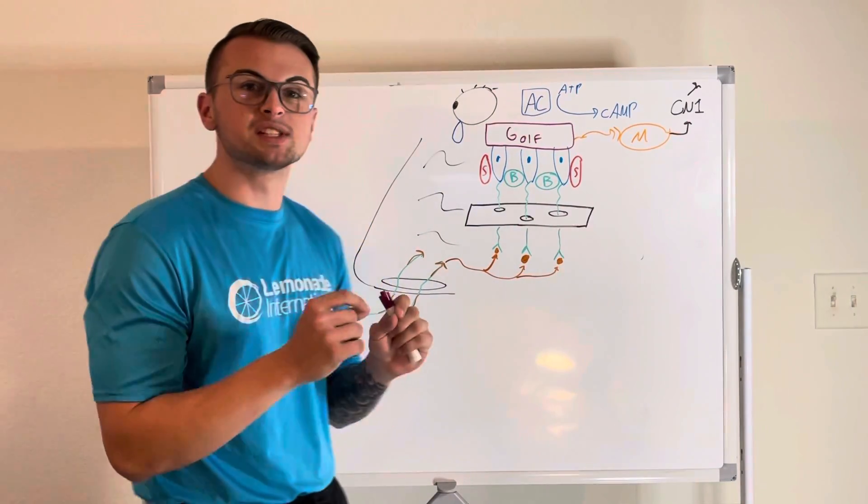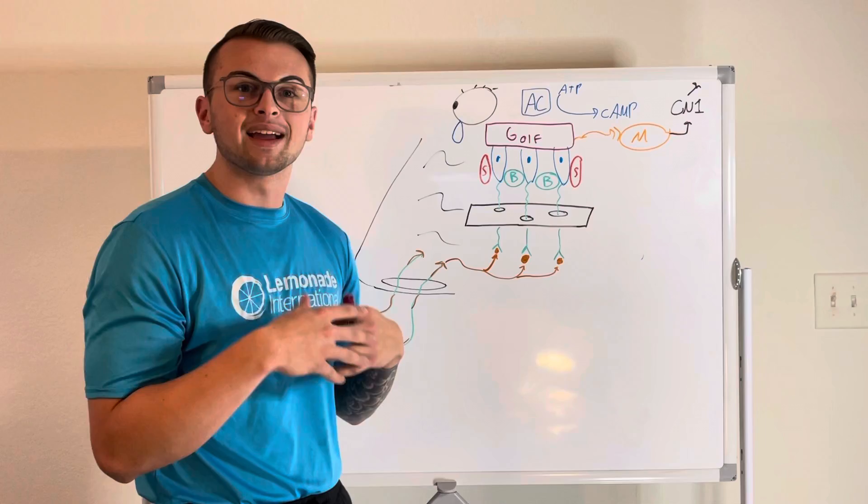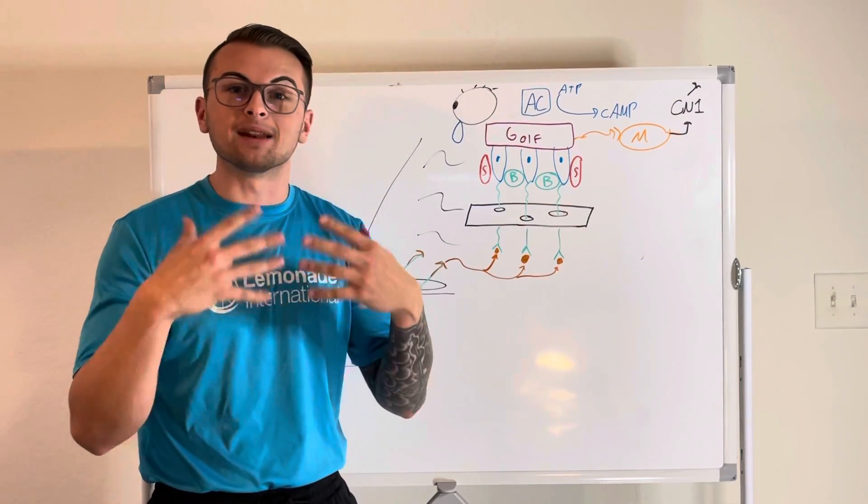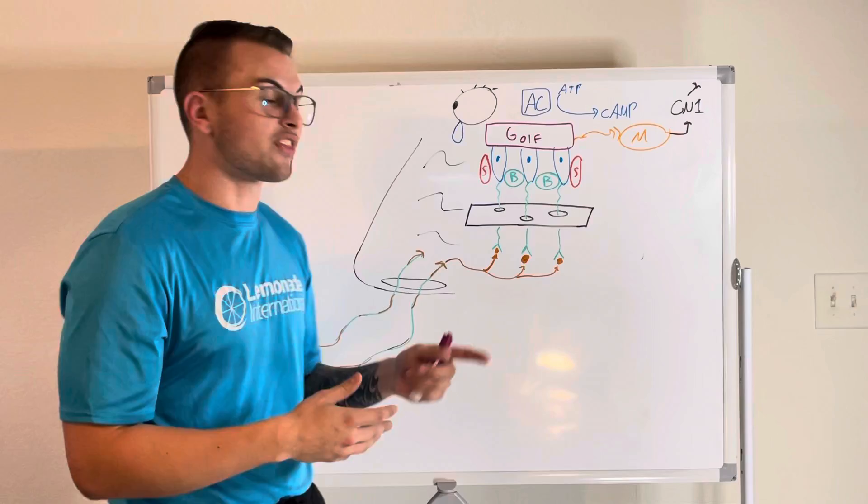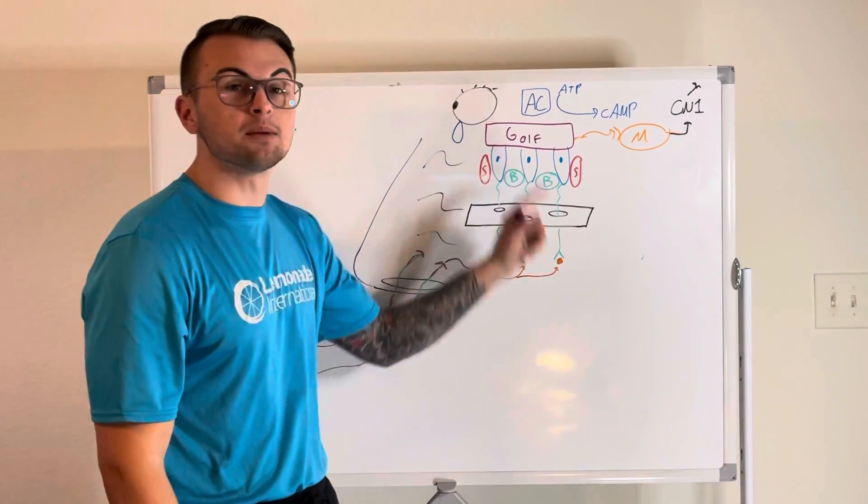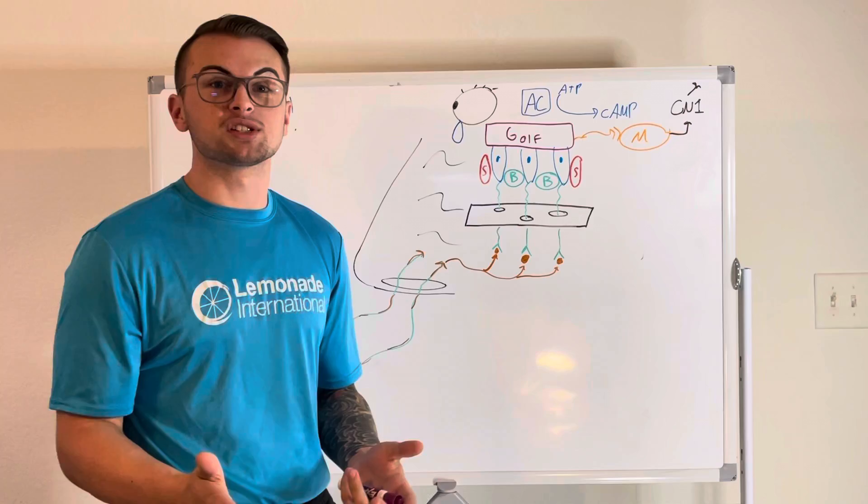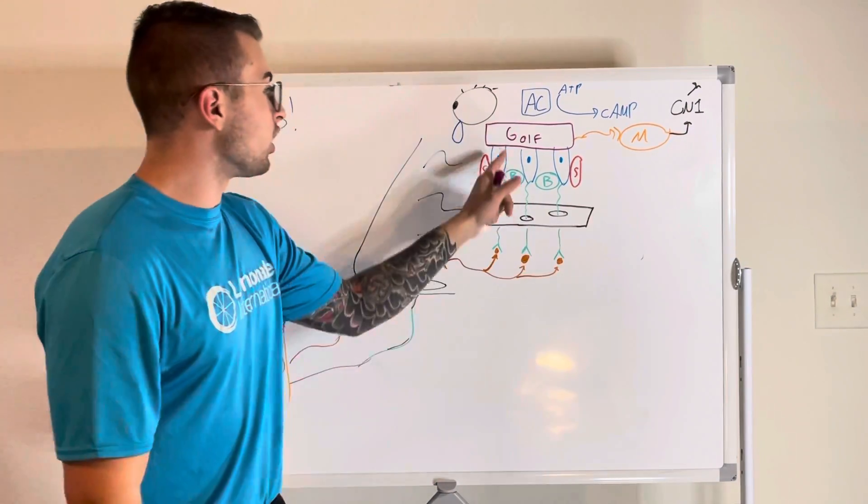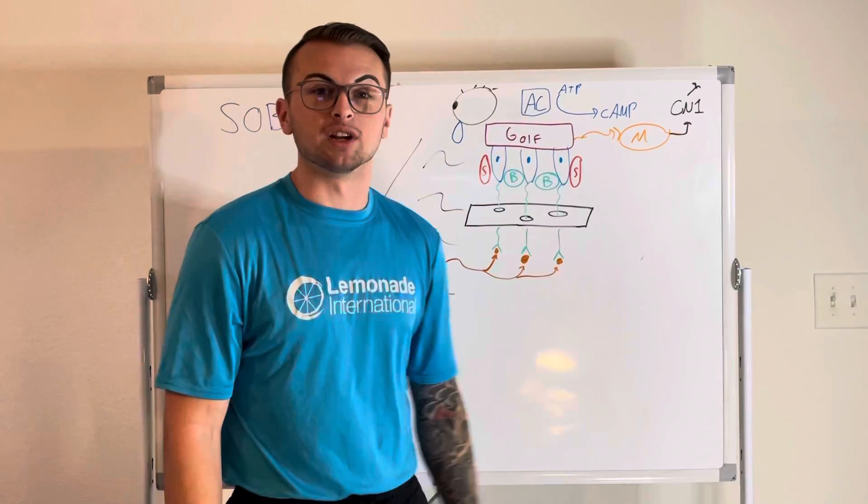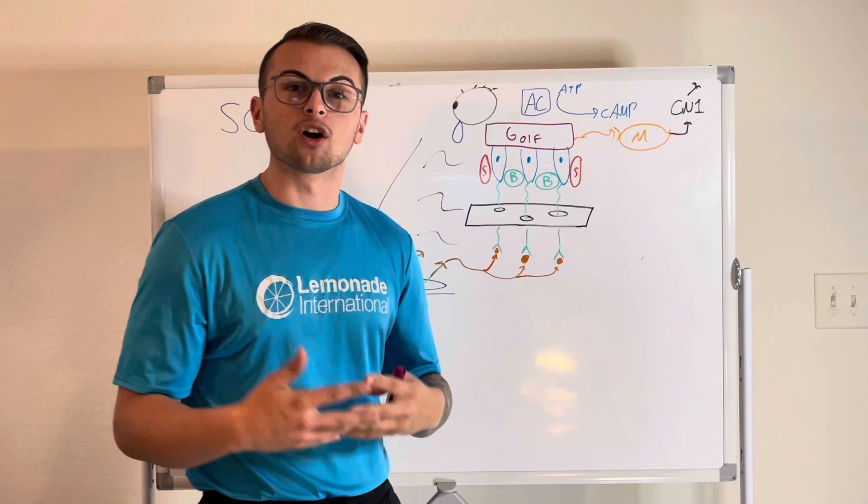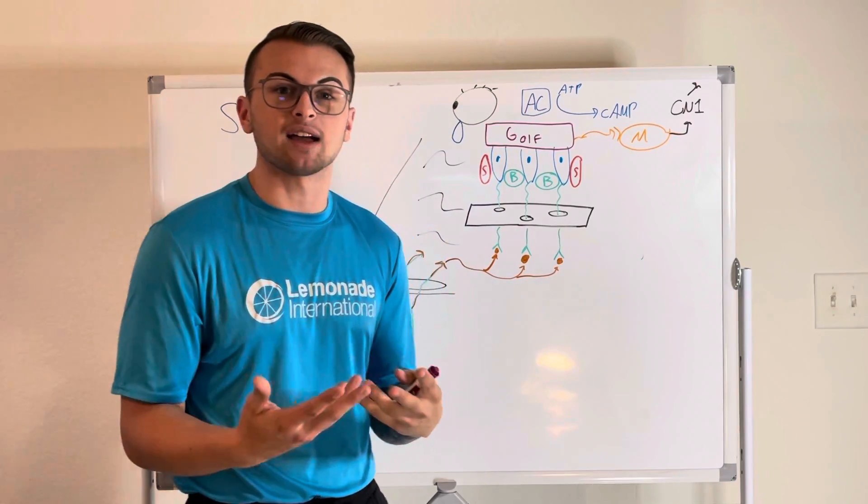So the specific odorant molecules for carrots, onions, broth, pepperoni, cheese, bread, can bind to any of these thousands of specific receptors, which are all coupled to g-proteins. So it's sort of humorous that these g-proteins for olfaction, OLF, are abbreviated as GOLF. So G-olfactory, GOLF. So these GOLF proteins are coupled to adenylyl cyclase.